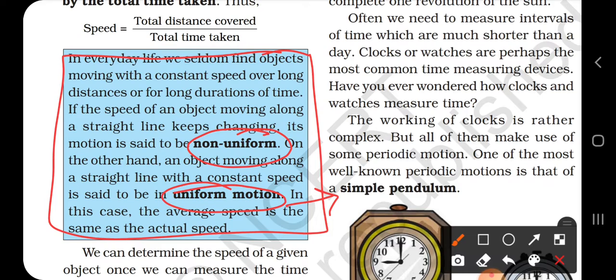How can we define uniform motion? When a body covers equal distance in equal interval of time, then it is called uniform motion. Or if a body covers equal distance in unequal interval of time, we call it non-uniform motion.